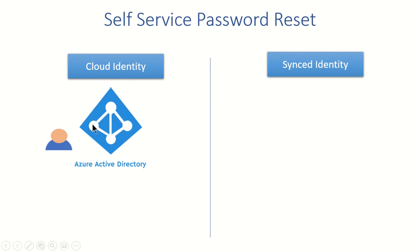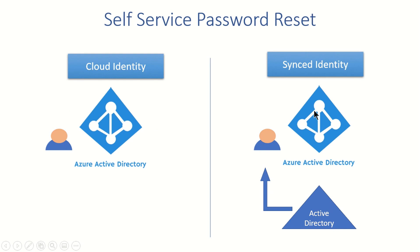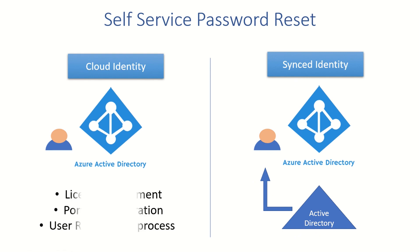For cloud identities, the setup is very simple because Azure Active Directory itself holds the user object and password. But for synced identities, objects are synced from on-premises to Azure AD, and you can use password sync, pass-through authentication, or a federated domain — the password and user object both originate on-premises.